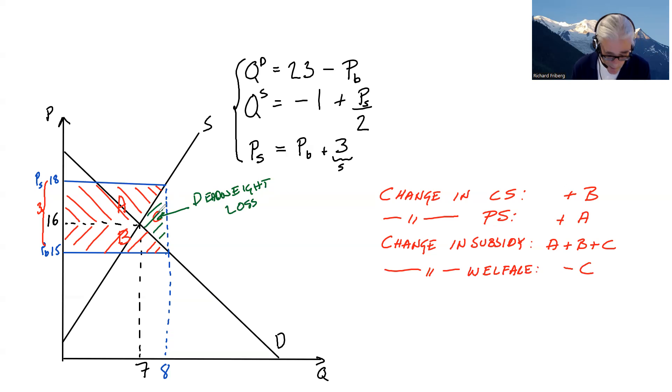What do we have here? We have that the value to consumers, what the consumers are willing to pay, is less than the cost to suppliers. Here, quantities are being added, units are being added, where consumers value it at less than what it costs to produce.